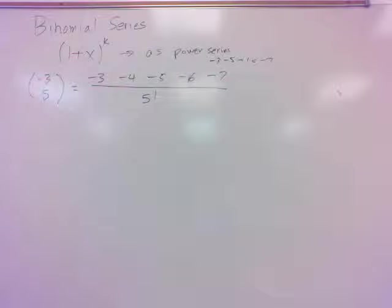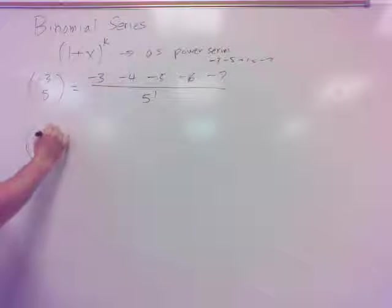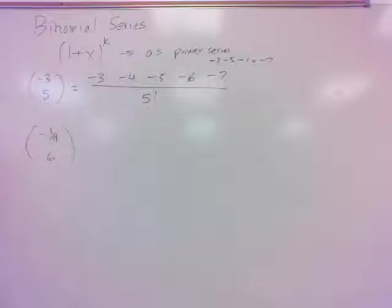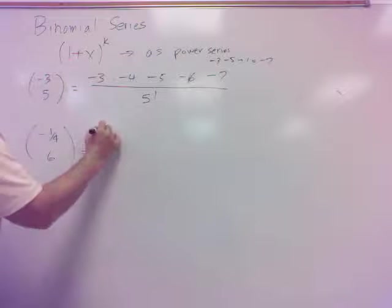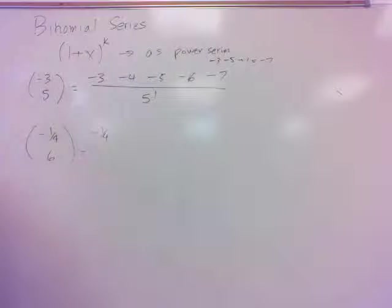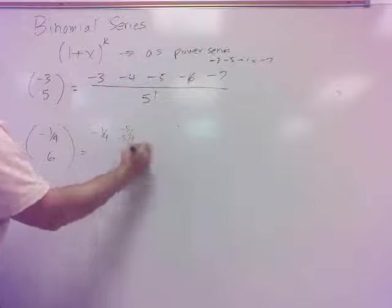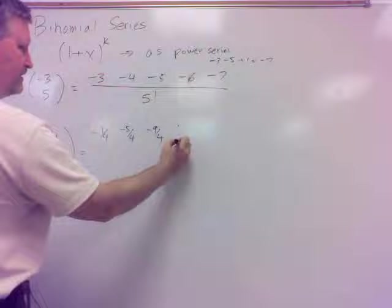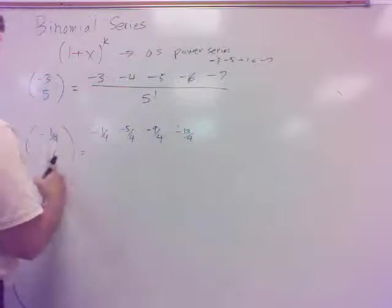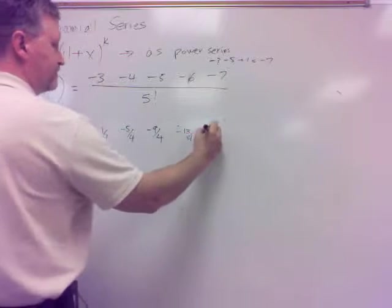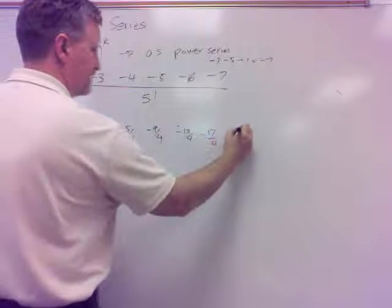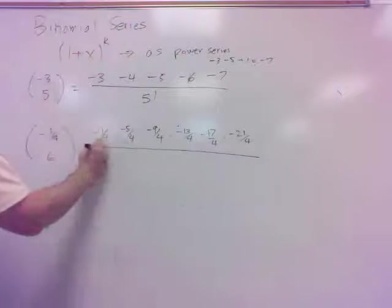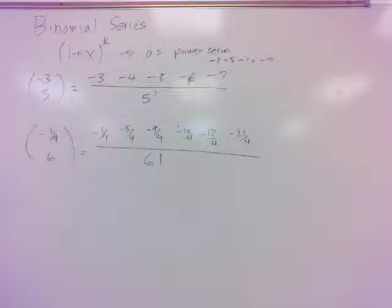And then here's another little twist. What if I have a negative 1 fourth, 6? Well, same thing. Start off with negative 1 fourth. Subtract 1, negative 5 fourths. Subtract another 1, negative 9 fourths. Subtract another 1, negative 13 fourths, until I have 6 of them. So I can use that trick one more time here, anyway. I think to get to 21 fourths. Then divide all that by 6 factorial.